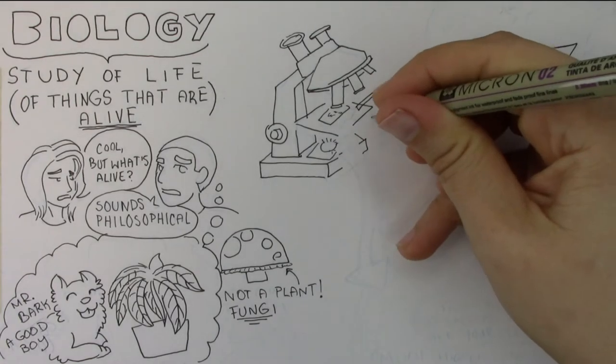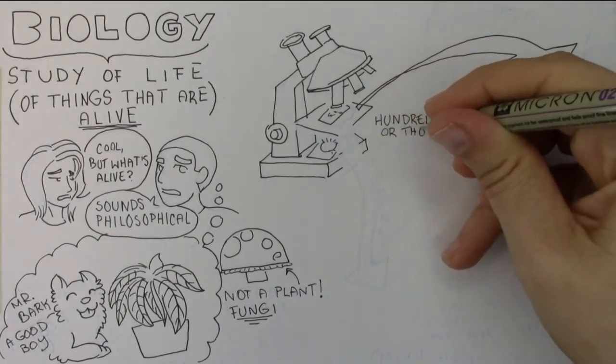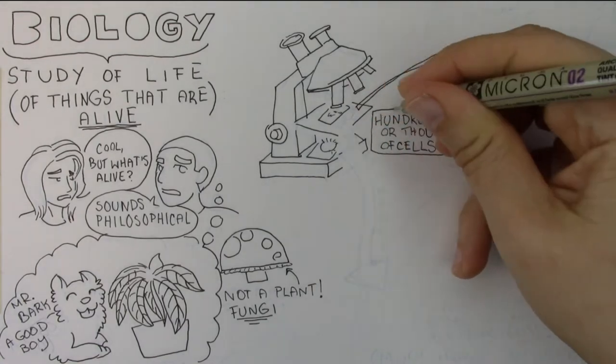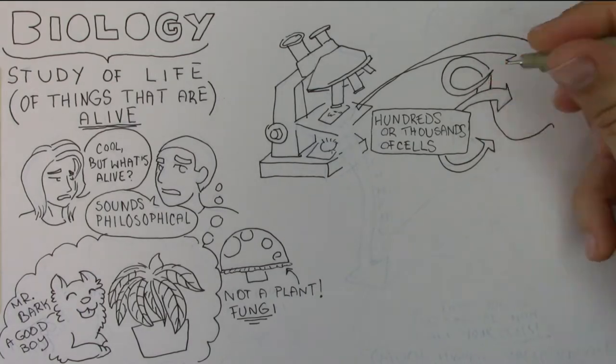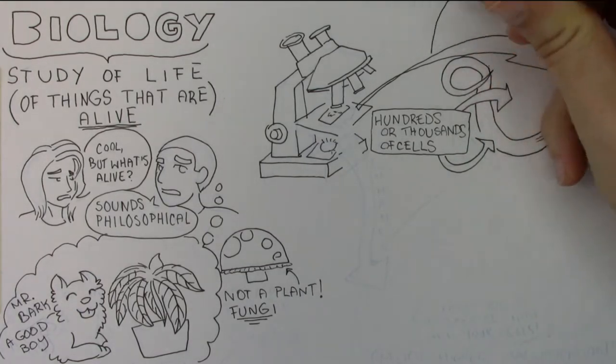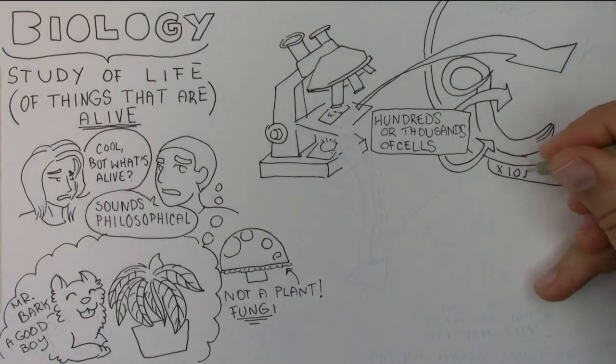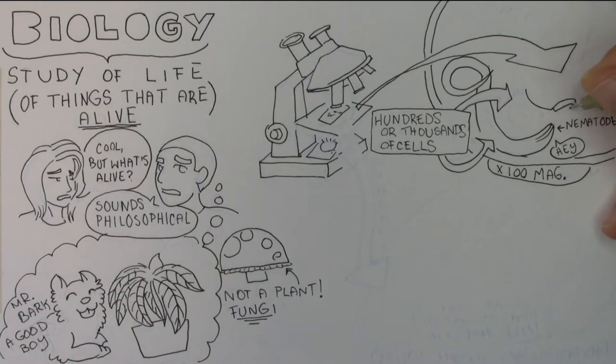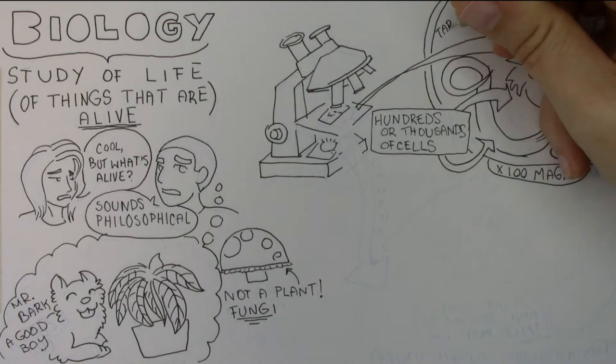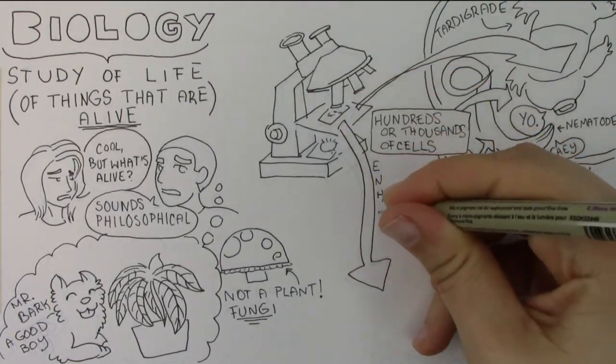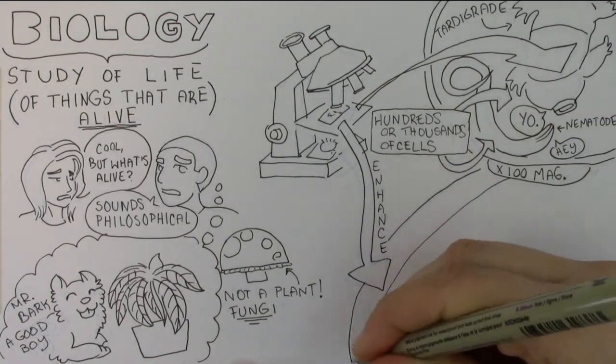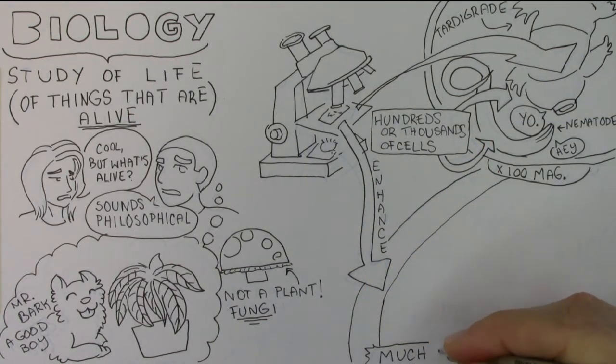So probably in the lab version of this class, you would go ahead and make slide mounts where you would look at things that, tiny as they are, they're still made up of hundreds or even thousands of cells. So these could include things like nematodes, these small wriggly worms that live in soil, water, or are parasitic. And it even includes some popular on the internet animals like tardigrades, also commonly known as water bears. So even though these things are microscopic, they're definitely alive. And they're actually quite complex animals with hundreds or thousands of cells.